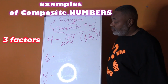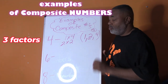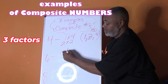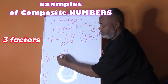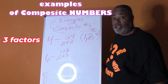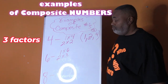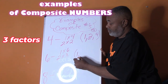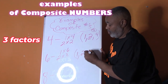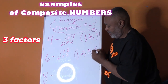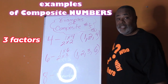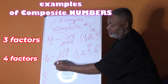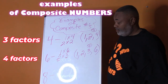Let's look at the factors of six. What two numbers can I multiply to give me six? One times six, and two times three. Are there any other numbers we can multiply to give us six? No, this is it. So the factors of six are one, two, three, and six. Six has four factors.